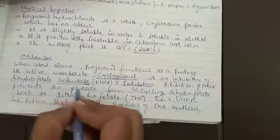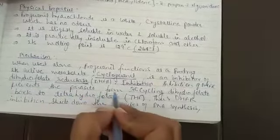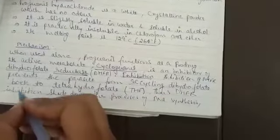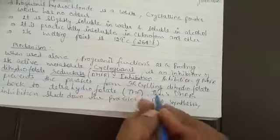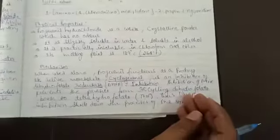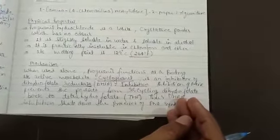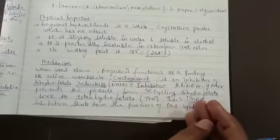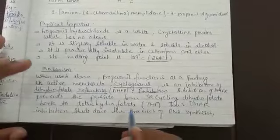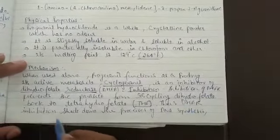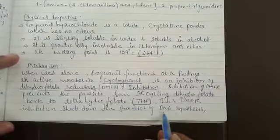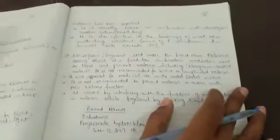Inhibition of DHFR, dihydrofolate reductase, prevents the parasite from recycling dihydrofolate. This affects the process of amino acid synthesis and methylation.